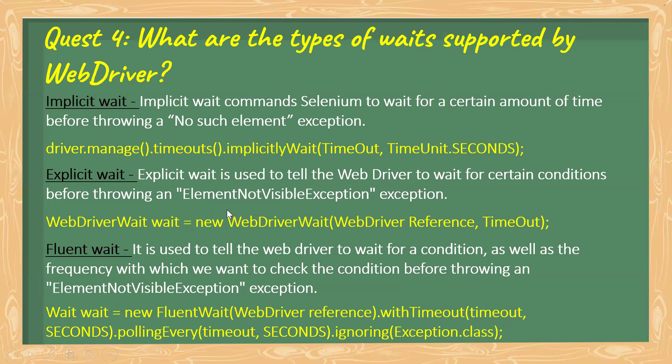Implicit wait is a wait used for a certain amount of time before throwing a 'no such element' exception. Whenever you use implicit wait and it cannot find the element, it will wait for the specified amount of time before throwing the exception. The syntax is: driver.manage().timeouts().implicitlyWait() where you provide the time and time unit.